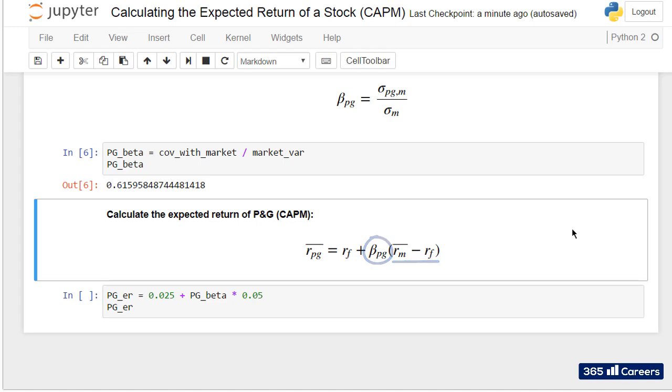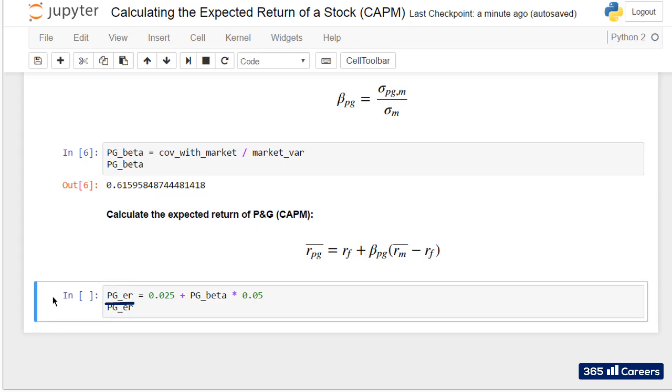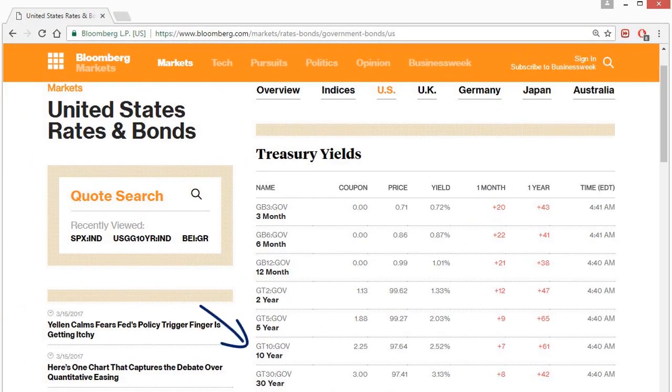Let's call PG_ER the expected return of Procter & Gamble and then calculate its value. We can get an approximation of the risk-free rate from Bloomberg's website. Look at the line corresponding to the 10-year government bonds.